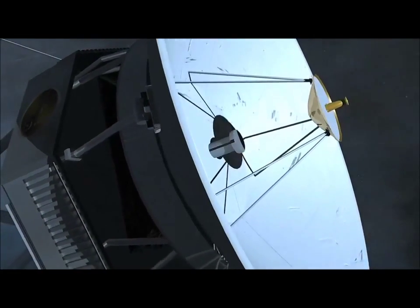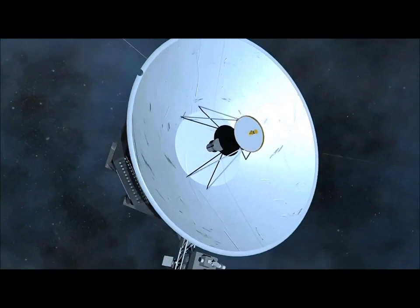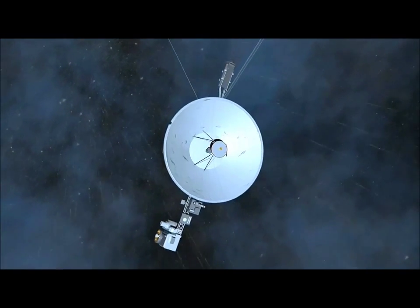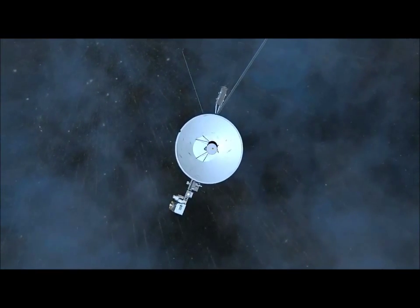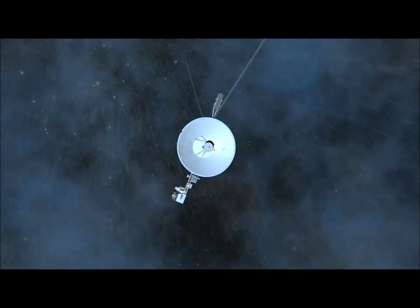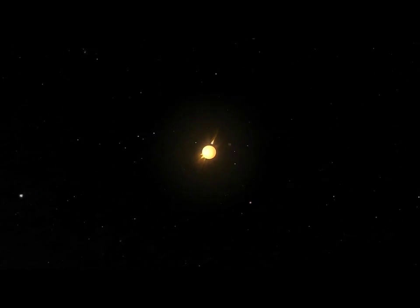The two Voyager spacecraft have been traveling away from Earth for more than 33 years, and they are finally in the outer edge of the solar system. This boundary is marked by the outer reaches of the Sun's magnetic field and solar wind, which form an enormous expanse called the heliosphere.